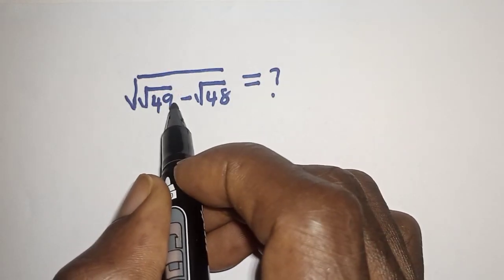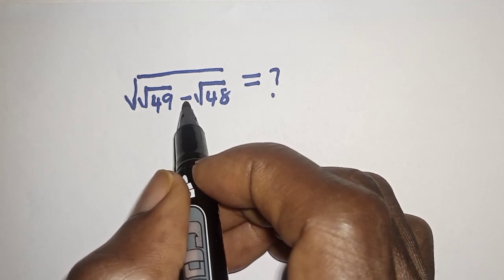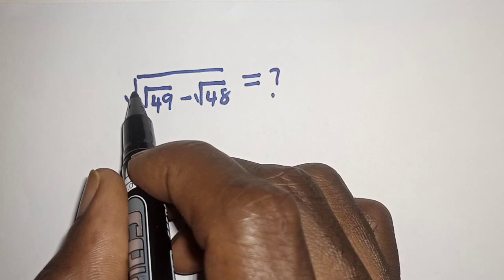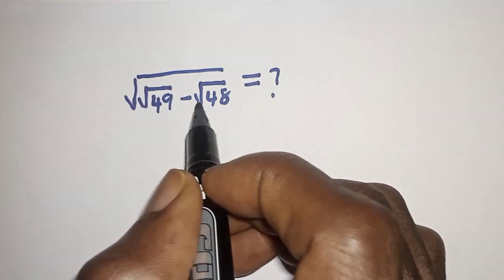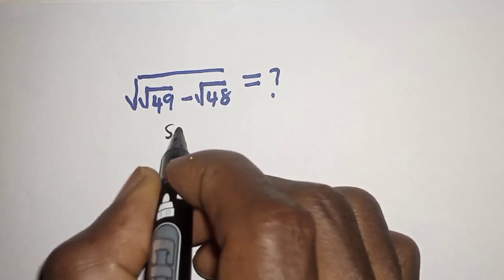Square root of square root of 49 minus square root of 48 is equal to what? Hello, welcome to math. In this class, I want to evaluate this nice math problem: square root of square root of 49 minus square root of 48 is equal to what. Like, share, comment, and subscribe. Solution: